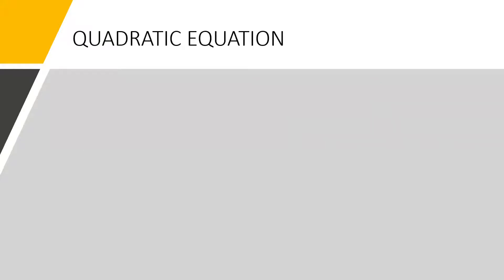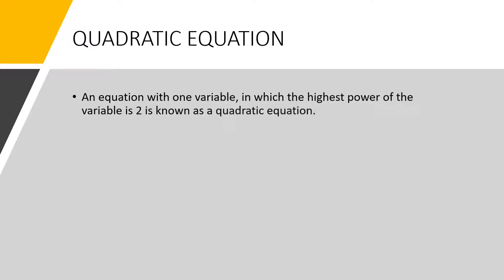Next, let us know what is a quadratic equation. An equation with one variable in which the highest power of the variable is 2 is known as a quadratic equation. For example, 4x squared minus 5x plus 3 equal to 0, and x squared minus 2x plus 1 equal to 0.